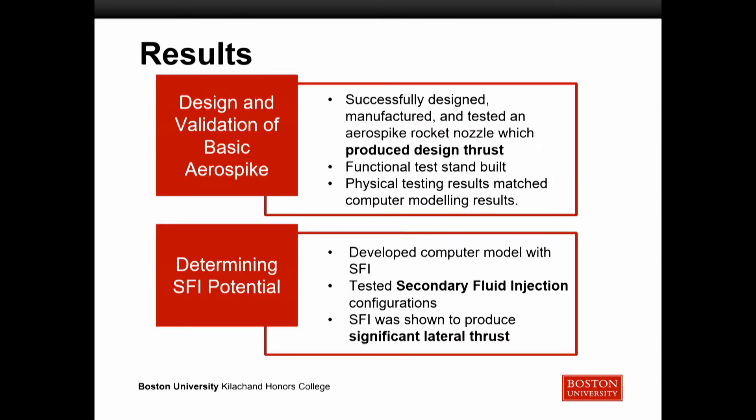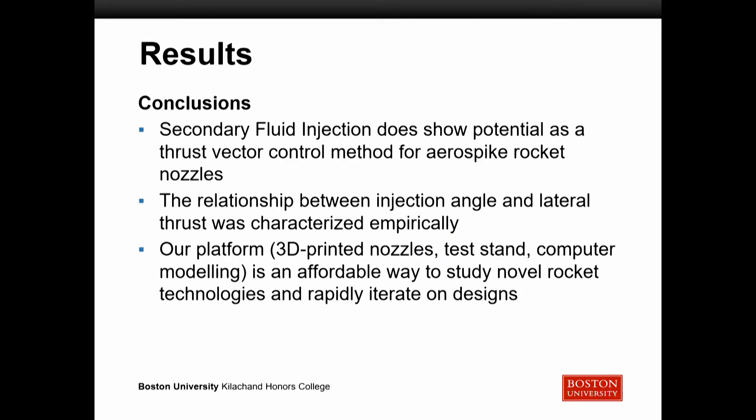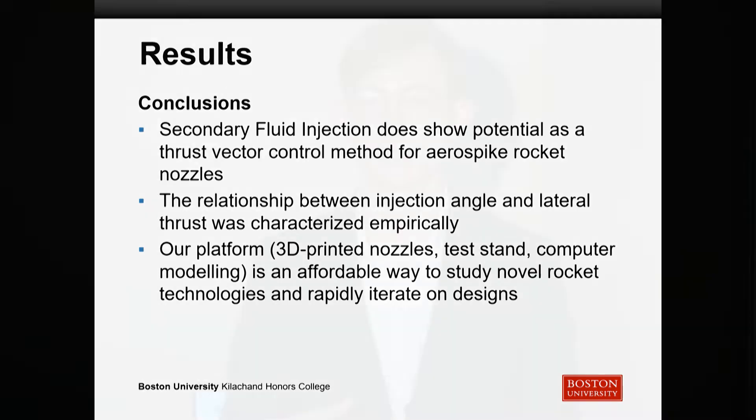We were able to successfully design, manufacture, and test an aerospike rocket nozzle, which performed as expected and produced the amount of thrust we wanted. We also designed a functional test stand and built the computer model. On the secondary fluid injection side, we developed a computer model and tested those configurations. Importantly, SFI was shown to produce significant lateral thrust, leading to the conclusion that secondary fluid injection shows potential as a novel thrust vector control method for aerospikes. We also empirically characterized the relationship between injection angle and lateral thrust. Unexpectedly, our platform — 3D-printed nozzles, test stand, and computer modeling — represents an affordable way to test novel rocket technologies and rapidly iterate on designs, especially at the college level.